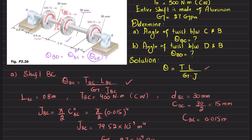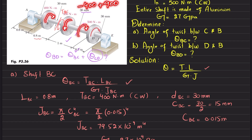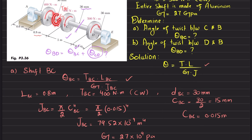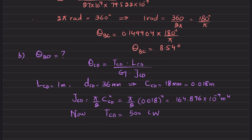Now we find T_CD. If we cut the shaft in section CD, we have two torques: clockwise 400 and counterclockwise 900. By equilibrium, -400 + 900 - T_CD = 0, so T_CD = 500 Newton-meters clockwise. However, since this is a clockwise twist and we take counterclockwise as positive, we take T_CD as -500 Newton-meters.